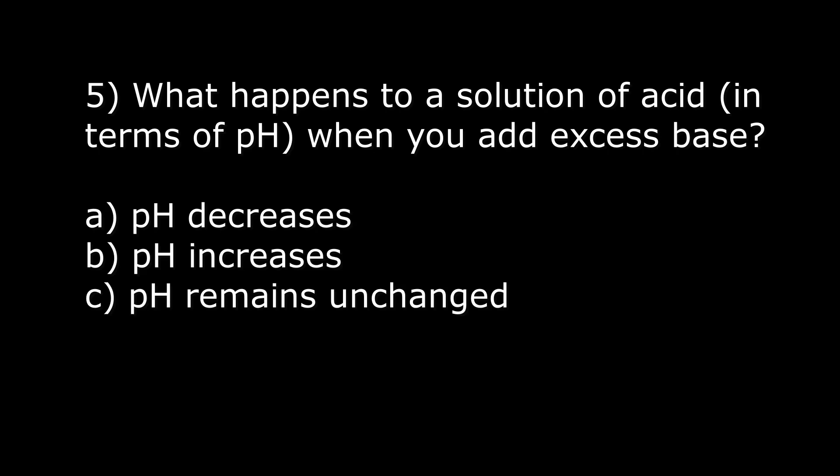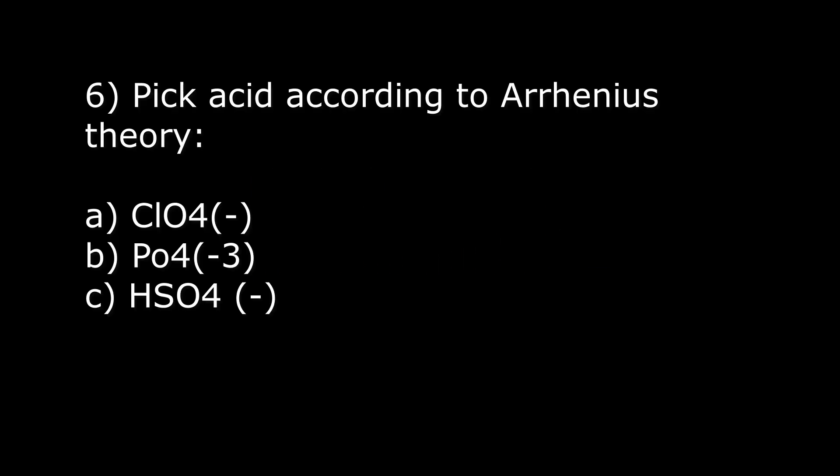Question number five: what happens to a solution of acid in terms of pH when you add excess base? a) pH decreases, b) increases, or c) remains unchanged. The answer is b, it increases because acidic pH is low. Question number six: pick the acid according to Arrhenius theory, is it a, b, or c? The answer is c because it's the only one that can ionize and give us hydrogen.